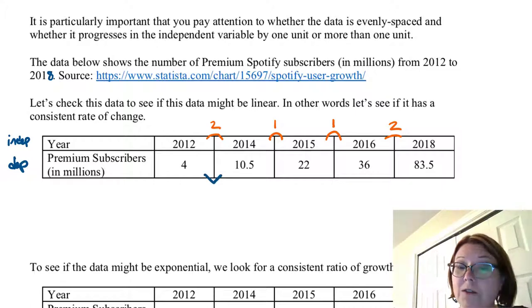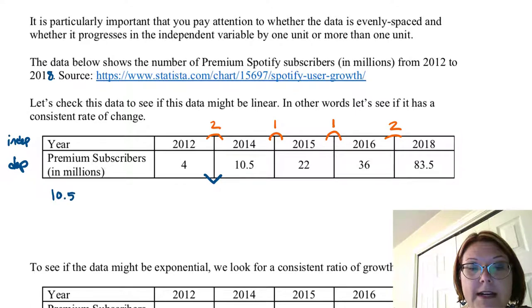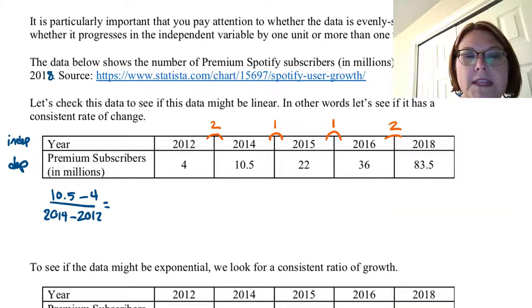Let's start with our first two data pairs. To find the average rate of change here, we would do 10.5 minus 4 divided by 2014 minus 2012. What this is giving us is 10.5 minus 4 divided by 2, and that comes out to be 3.25.